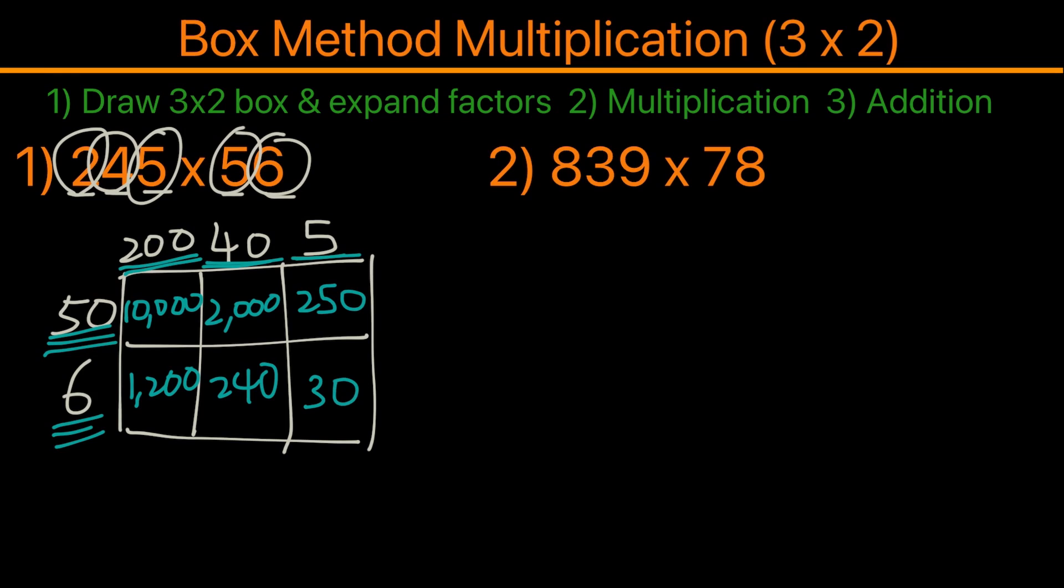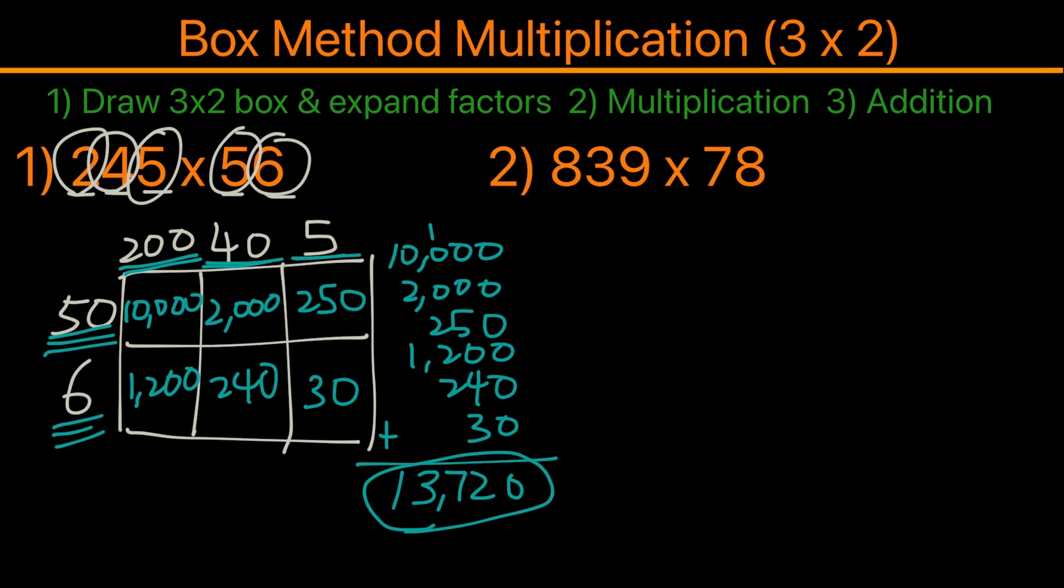So now that we got all the numbers in the box, what we're gonna do next is to add up all the numbers. So we have 10,000, then we have 2,000, 250, 1,200, 240, and then 30, and we're gonna add them all together. So this will be 0, and this will be 2, so 1 on top, then this will be 7, then this will be 3, and 1. So the answer for the first example will be 13,720.